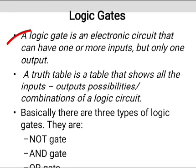What is a logic gate? A logic gate is an electronic circuit that can have one or more inputs but only one output. The operation of a logic gate can be easily understood with the help of the truth table. What is a truth table? A truth table is a table that shows all the inputs and outputs possibilities of a logic circuit. Basically, there are three types of logic gates: NOT gate, AND gate, and OR gate.